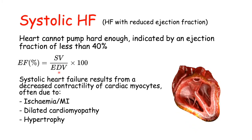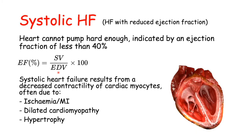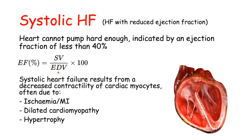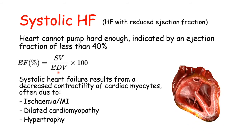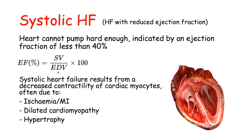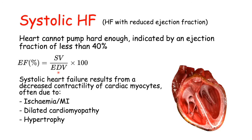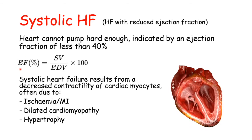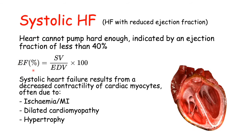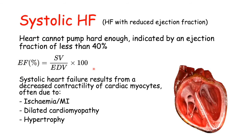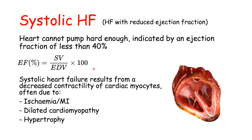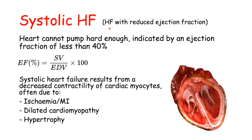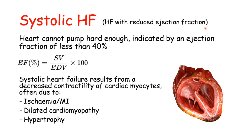The end-diastolic volume is the total blood volume in the ventricle at the end of diastole — essentially the total amount of blood that fills the ventricles. In simple terms, the ejection fraction is just that fraction of blood ejected from the ventricle during systole. Systolic heart failure is also called heart failure with reduced ejection fraction.